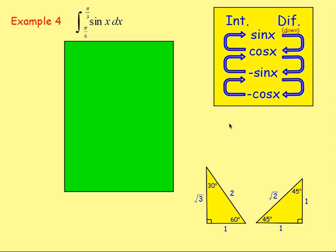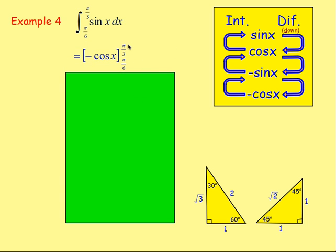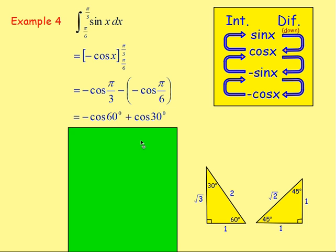Example 4: integrate sin(x) between π/3 and π/6. Integrating sin(x) gives negative cos(x). In big square brackets: negative cos(π/3), take away negative cos(π/6). The two negatives become a positive, so it becomes negative cos(60°) plus cos(30°). Using exact value triangles: cos(60°) is 1/2 and cos(30°) is √3/2. So we have negative 1/2 plus √3/2.